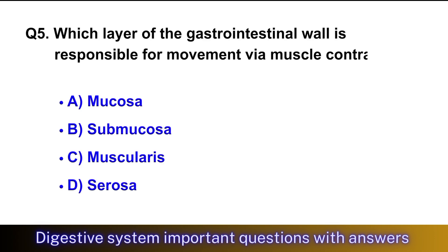Question No. 5: Which layer of the gastrointestinal wall is responsible for movement via muscle contraction? The right option is option C, muscularis.